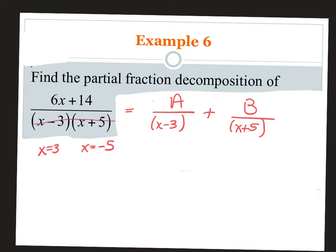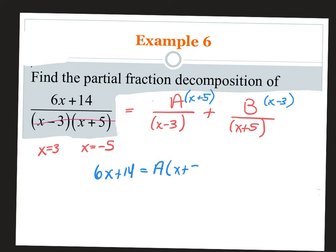Comparing to the original: 6x plus 14 over (x minus 3)(x plus 5). The first fraction A has (x minus 3) — it's missing (x plus 5), so multiply the numerator by (x plus 5). The second fraction B has (x plus 5) — it's missing (x minus 3). Now we all have the same denominator, so rewrite as: 6x plus 14 equals A times (x plus 5) plus B times (x minus 3).